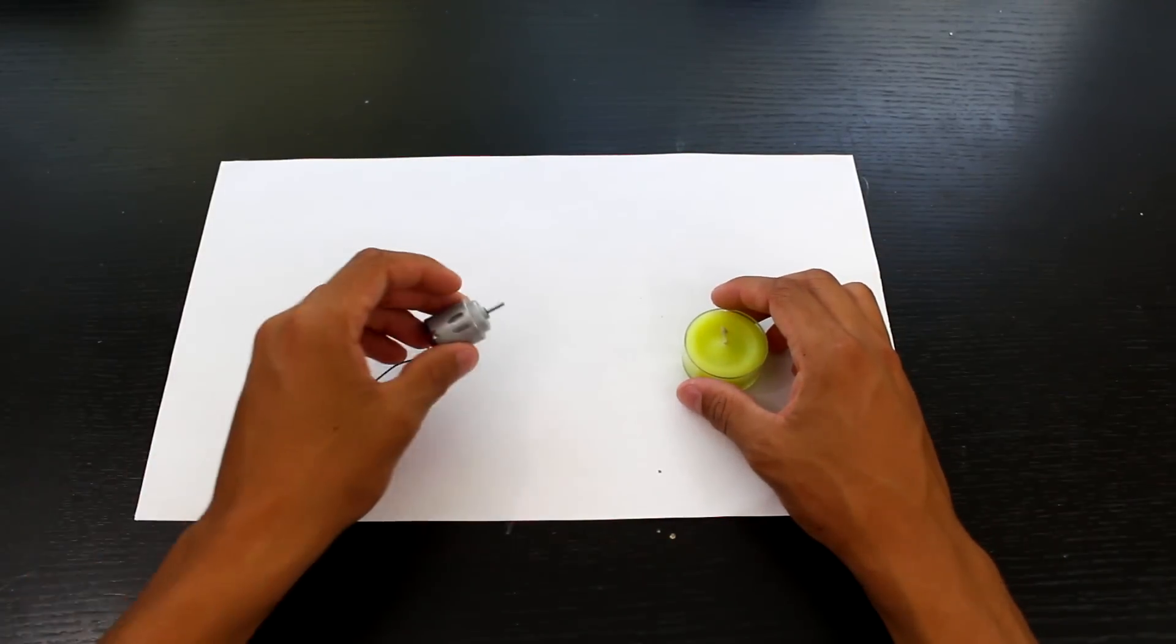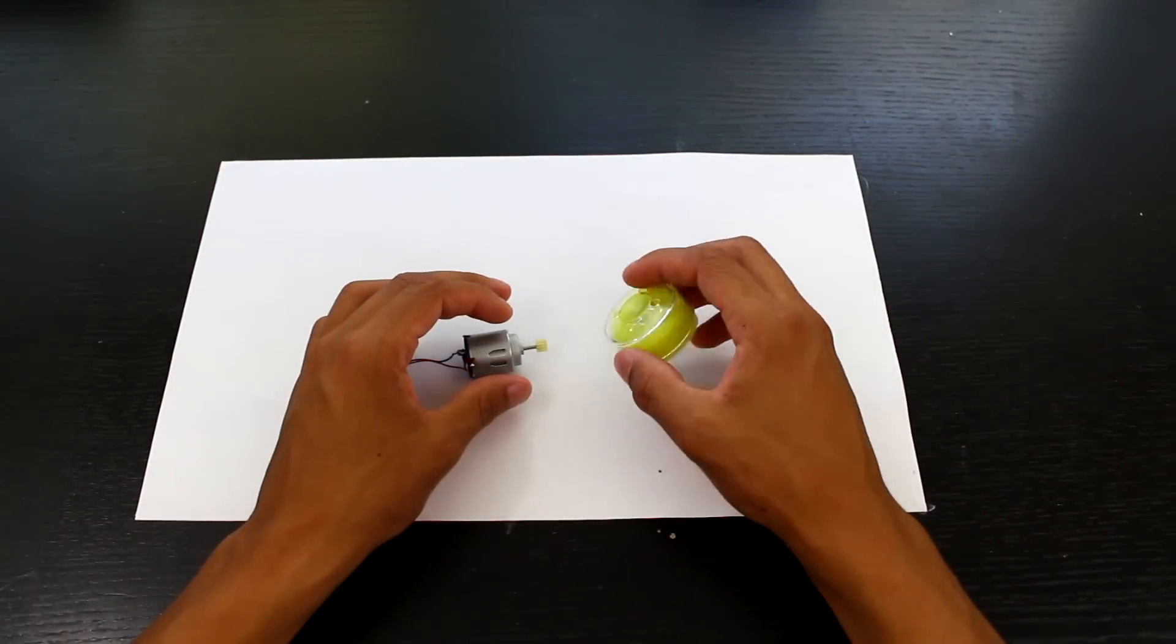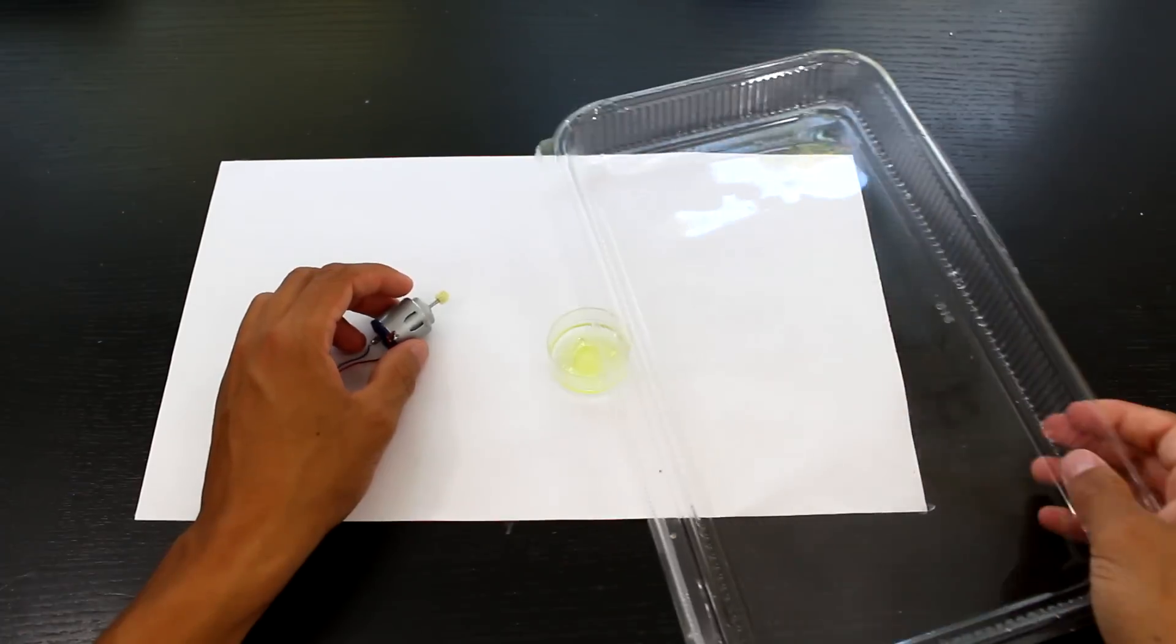To start the build off, we're going to need a small motor and the hard plastic case around a dollar store candle.